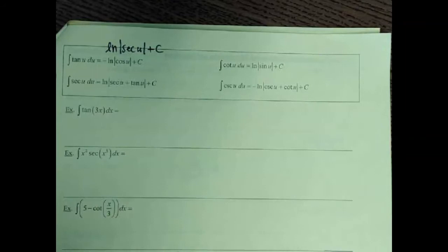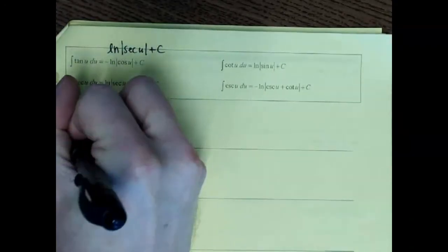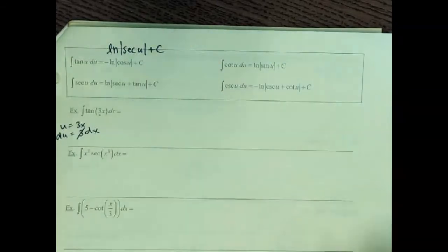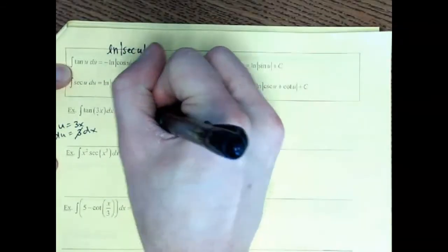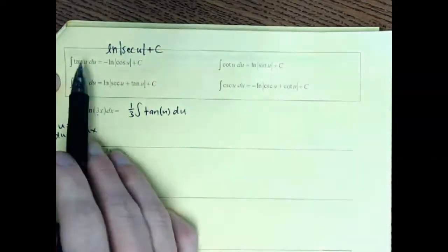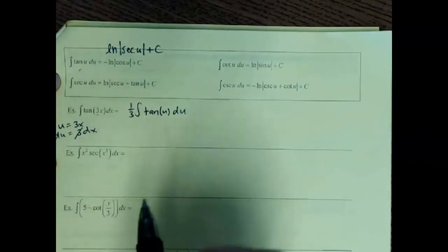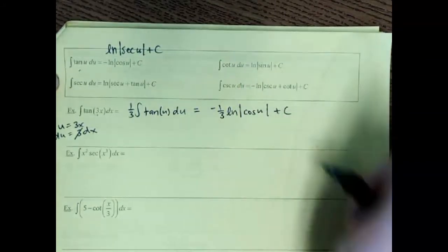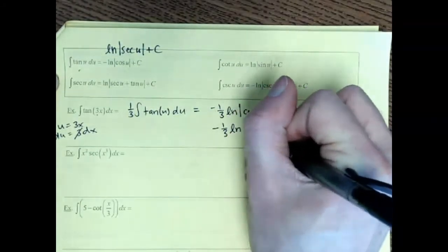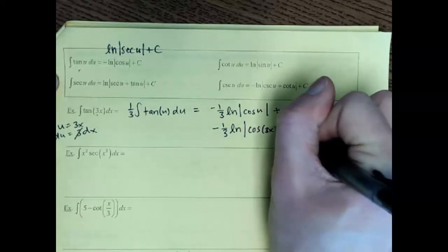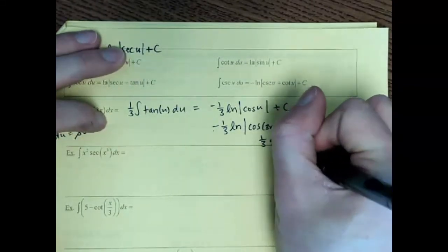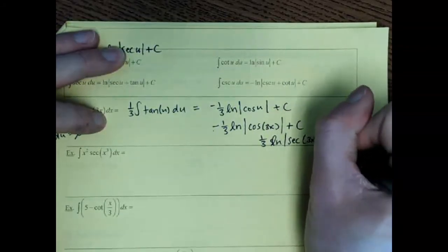Example: integrate tan(3x). Use u-sub with u = 3x. The derivative is 3 dx, so since we're missing the 3, the u-sub kicks out a one-third. We get (1/3) integral of tan(u) du. Using the formula, integration of tangent is −ln|cos u|, giving −(1/3) ln|cos(3x)| + C. Alternatively, you could write +(1/3) ln|sec(3x)| + C — either form is fine; professors differ on preference.